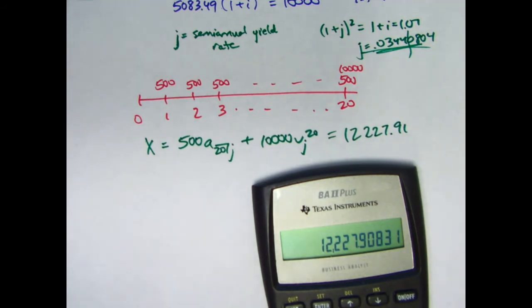If you end up rounding J to 0.0344 like they do in the solutions manual, you get closer to $12,229. So it does make at least a dollar or two of difference depending on how you round J.